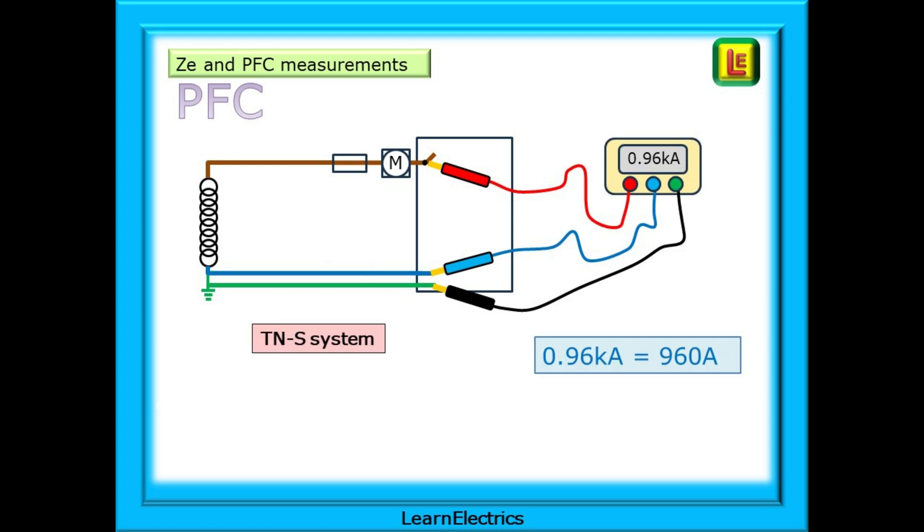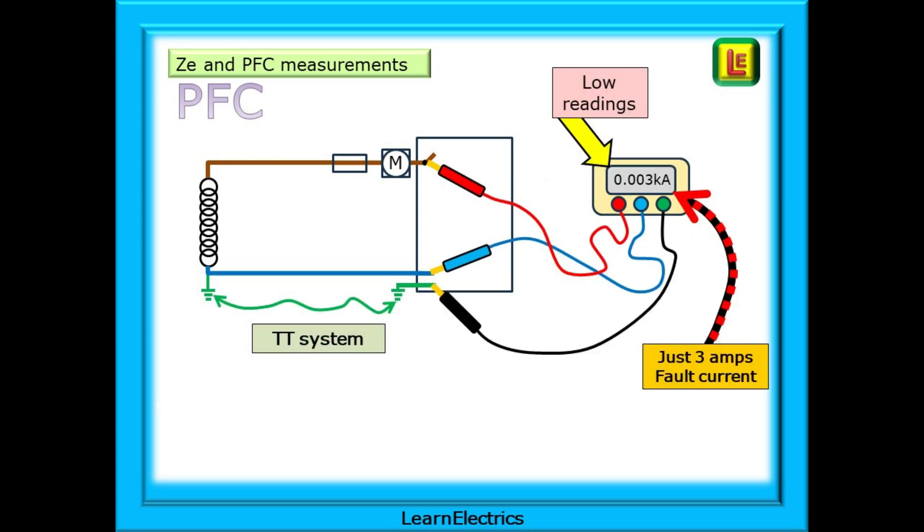The same PFC test method is applied for TNS systems, two wire or three wire. Shown here the meter is displaying 0.96 kiloamps or 960 amps. Get used to working with zeros and decimal points in the test results. And now for a TT system.